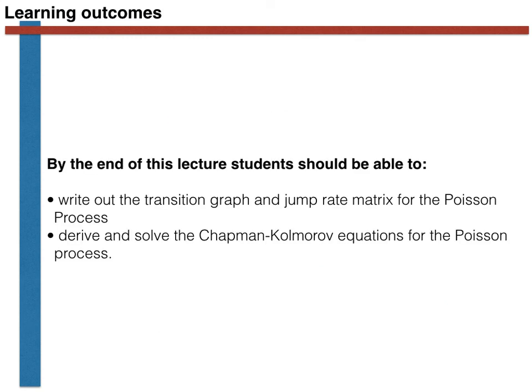To conclude, the learning outcomes from this video were for you to be able to write out the transition graph and jump rate matrix for the Poisson process, and to derive and solve the Chapman-Kolmogorov equations for the Poisson process. Make sure you can do these things before moving on. The Poisson random variable is an important stochastic process that finds application in the study of many random processes, and many more complex stochastic processes are derived by relaxing various assumptions in the derivations this video has demonstrated. Thank you for your attention.